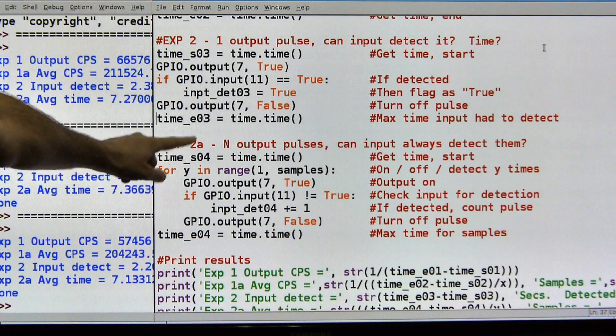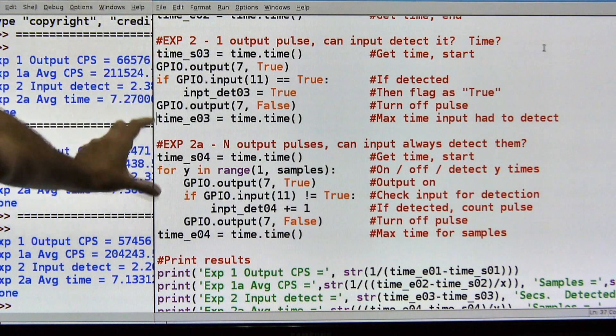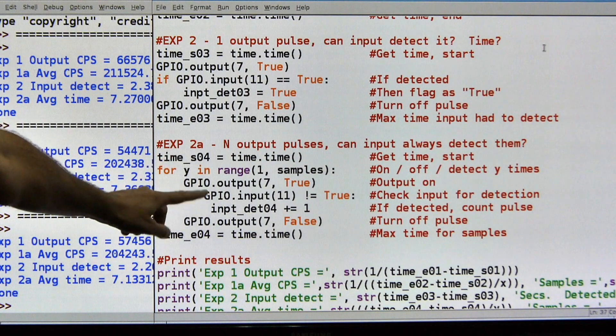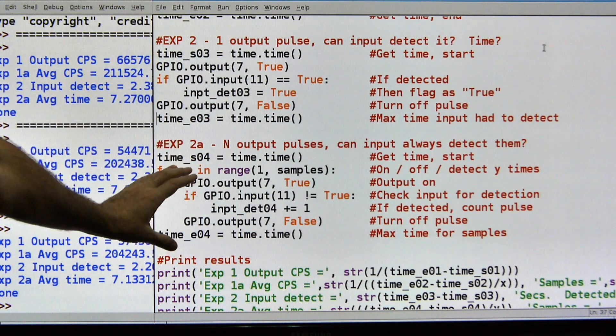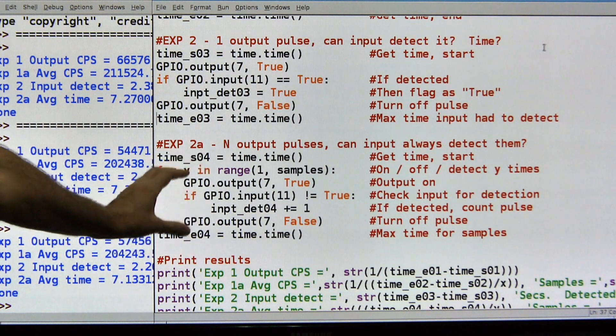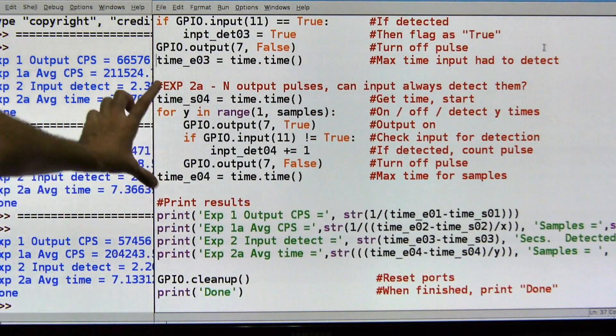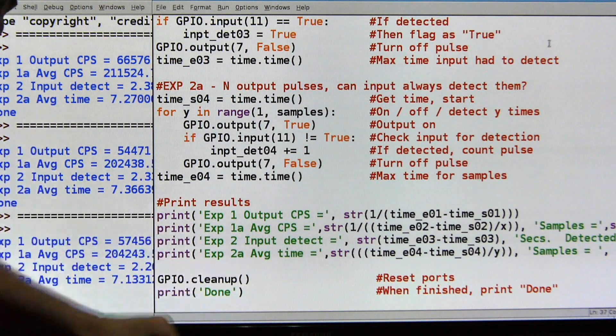So I grab the time, I turn the output pin on, I check to see if the input pin is detecting that. If it is, I say true, I set it to true, and then I turn the output off, and then I grab the time again. Then experiment 2A, it's just like this one, except that I'm going to run it 10,001 times. So I just run this in a loop, same exact idea, going to check the output detection, and then output off times, capture those, and then I'm going to print them.